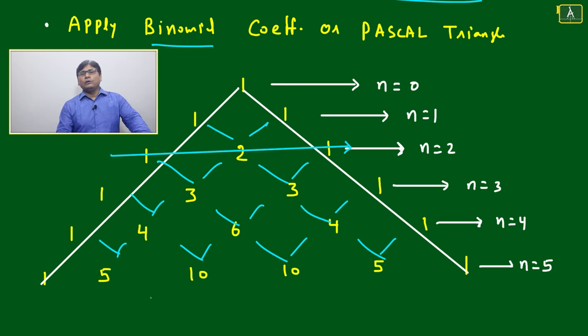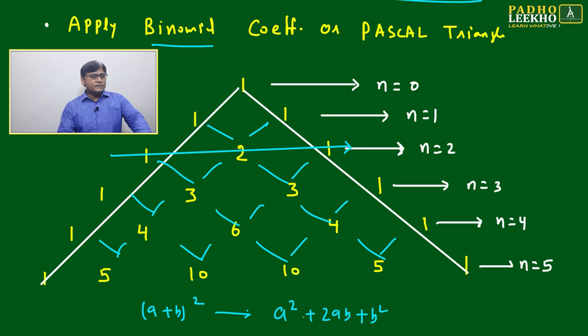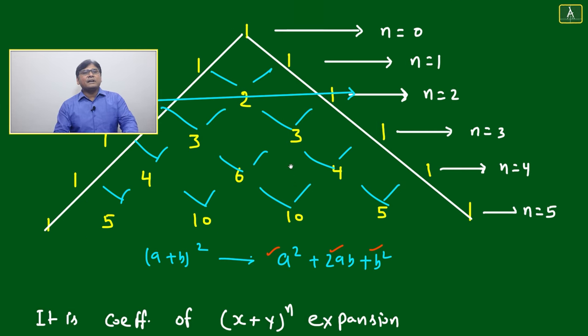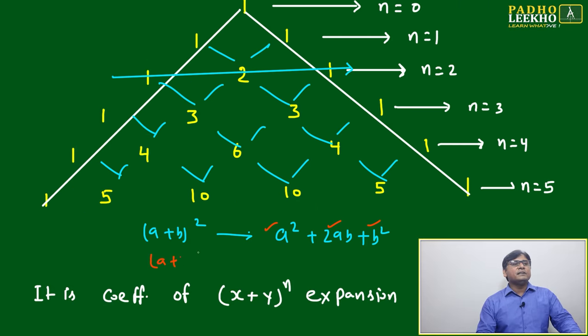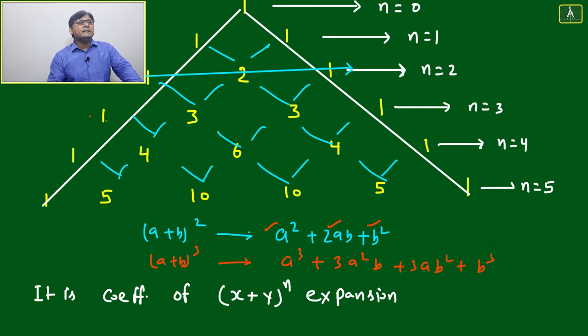This is n equals 2. If you want to expand (a+b)^2, the coefficients will be 1, 2, 1. We already know: a² + 2ab + b². What are the coefficients? 1, 2, 1. If you write it out, it's the same - you take the third row for (a+b)³.